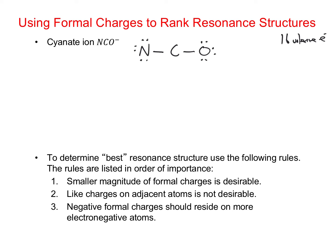I need to convert lone pairs into bonding pairs. I can either take 2 lone pairs from nitrogen, giving a triple bond between nitrogen and carbon, or I could do the same with oxygen, giving a triple bond between carbon and oxygen. Or I could take 1 lone pair from both nitrogen and oxygen to give double bonds between carbon-nitrogen and carbon-oxygen. Those 3 resonance structures for cyanate are thus drawn.